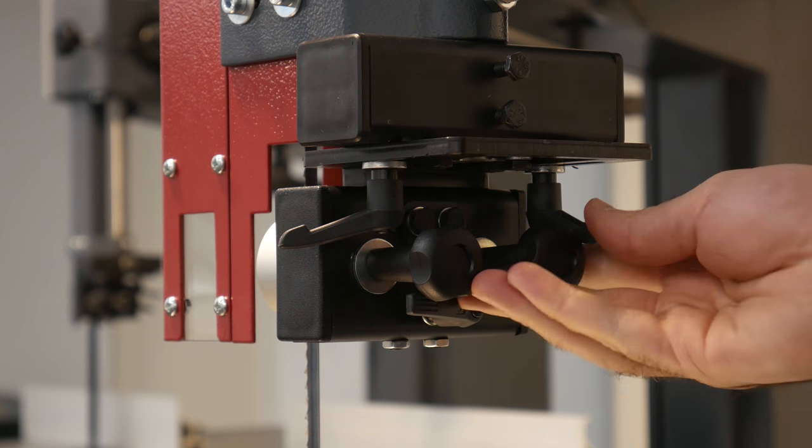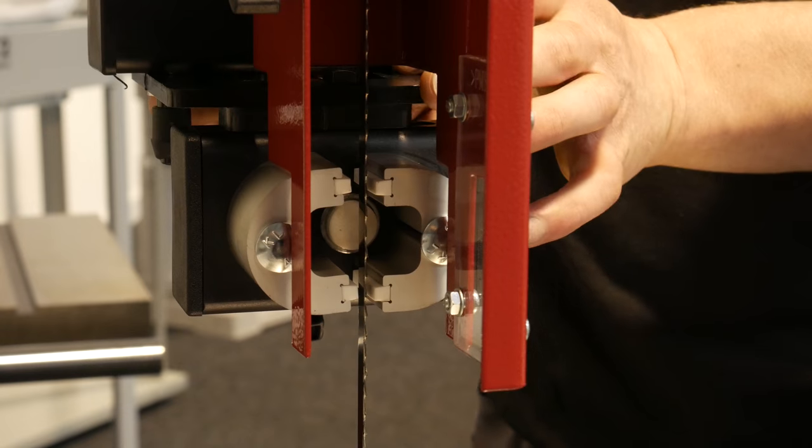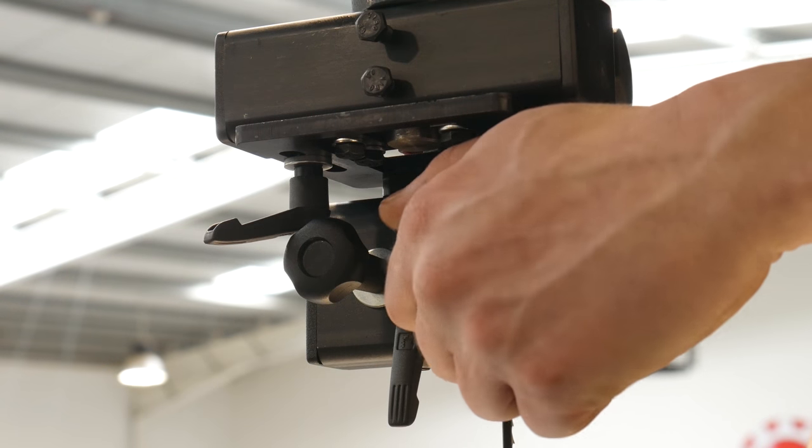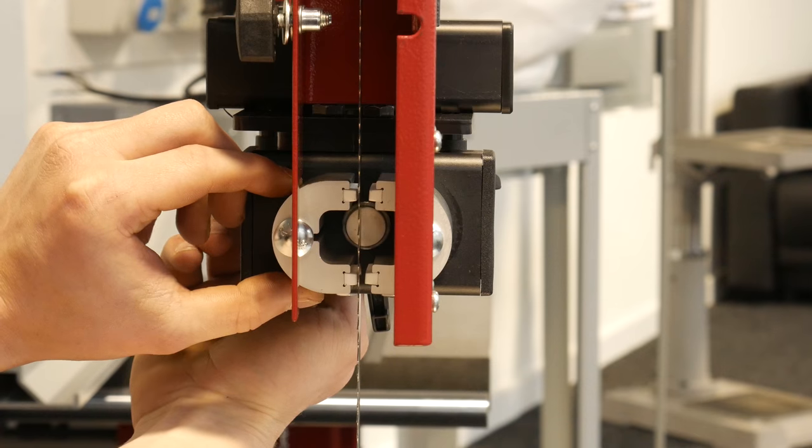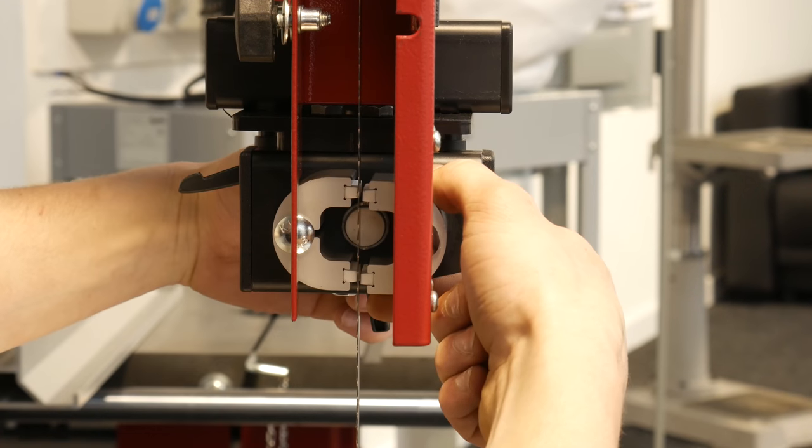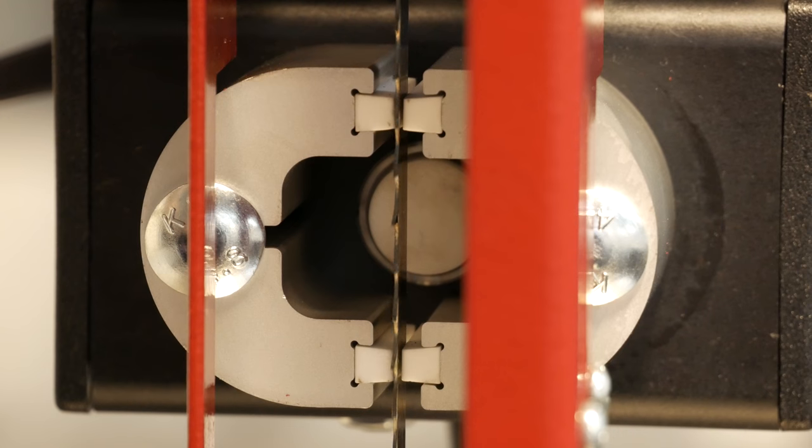Start by loosening the two clamps behind the saw blade guides to bring the assembly forward. Then unscrew the clamping screws to move the ceramic side guides into position. These guides should just about touch the blade without causing any friction to ensure a straight and vibration-free cuts. Retighten the screws.